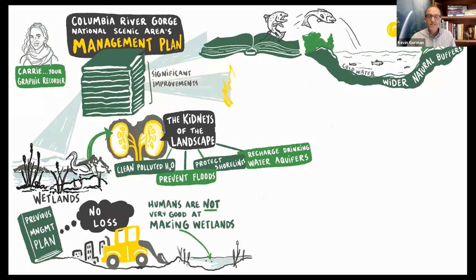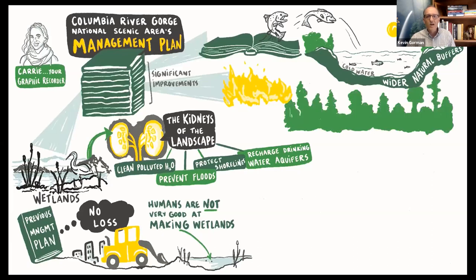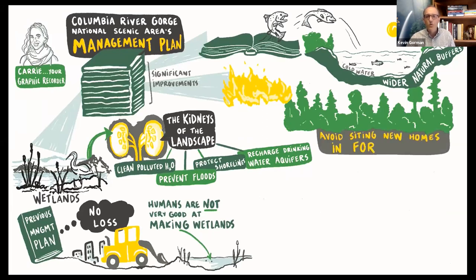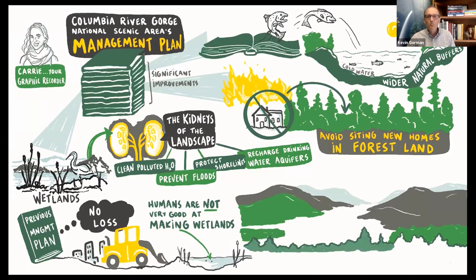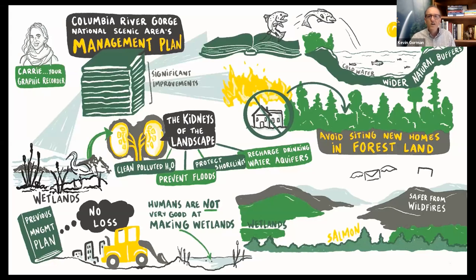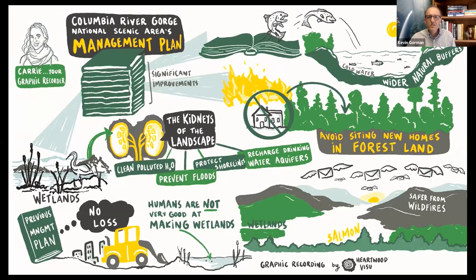We also worked to protect wetlands — among the most biologically diverse places on the planet, considered the kidneys of the landscape in that they clean polluted water, prevent floods, protect shorelines, and recharge drinking water aquifers. The previous management plan called for a no net loss of wetlands, but what it actually meant is that developers could destroy a perfectly good wetland as long as they recreated a new one. While we humans are very good at making babies and martinis, we are not good at making wetlands. So our staff worked to convince the Commission to prohibit the destruction of wetlands and delete the word 'net' from the wetlands language. Now no wetlands can be altered or destroyed, and the prognosis of the gorge kidneys looks better than ever.